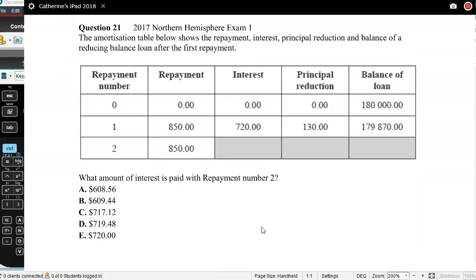Let's do an example from 2017 Northern Hemisphere multiple choice exam. So we've got an amortization table showing repayment, interest, principal reduction, and balance of a reducing balance loan after the first payment. So we've borrowed 180,000 and we are repaying each time $850. So what amount of interest is paid with repayment number two? Let's think about how can we figure out what that is.